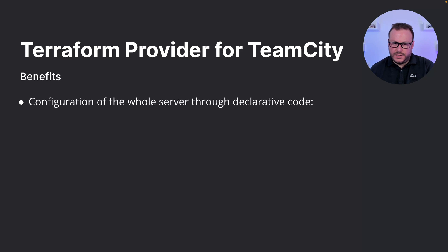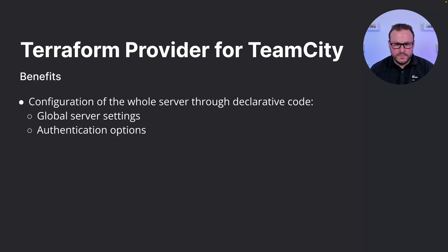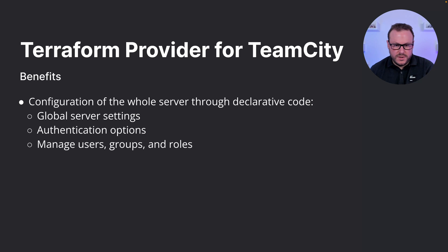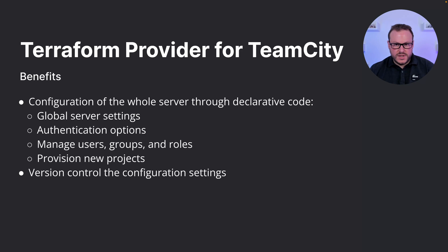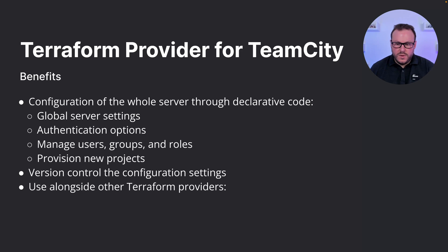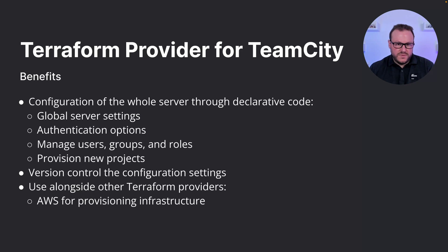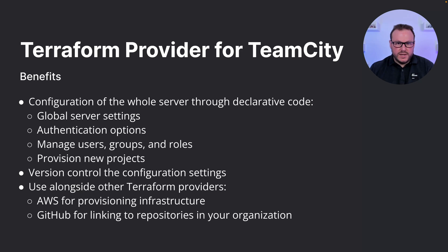The provider lets you configure the whole server through declarative code. You can configure global server settings such as the maximum artifact size and storage location, authentication options including which single sign-on methods users can log in with, managing users, groups, and roles, and provisioning new projects. You can also version control the configuration settings, giving you a full audit of changes and the ability to roll back to a previous version. You can also combine this provider with others, for example using the AWS provider to provision TeamCity infrastructure or the GitHub provider to link repositories and create them as projects in TeamCity.